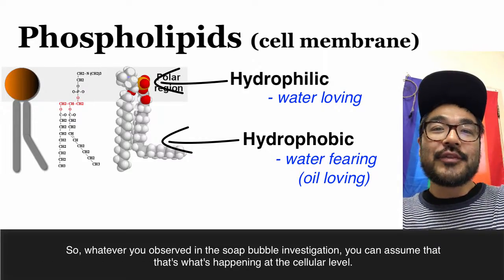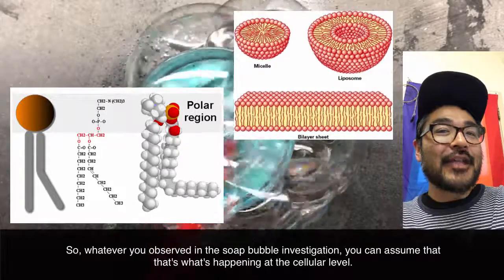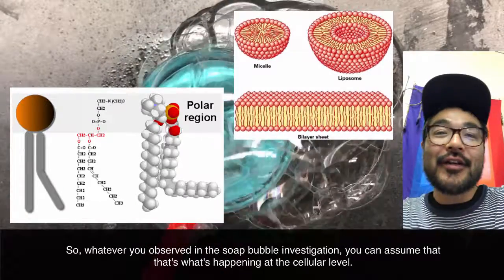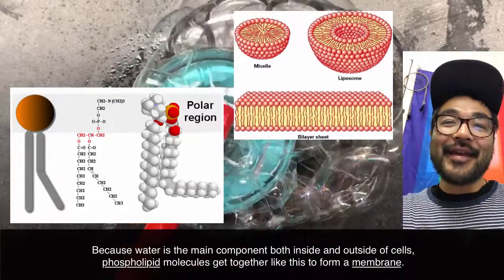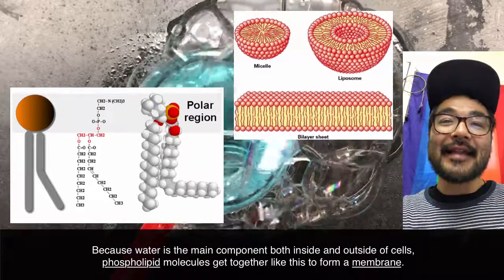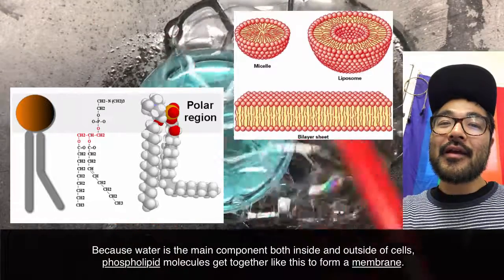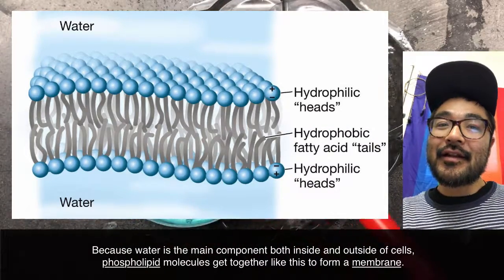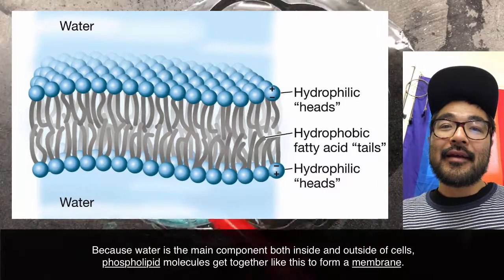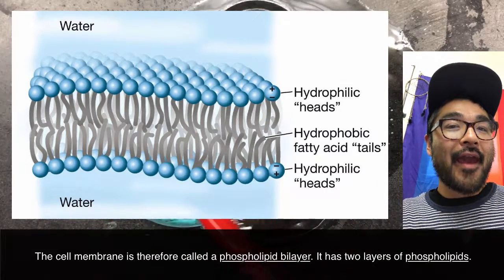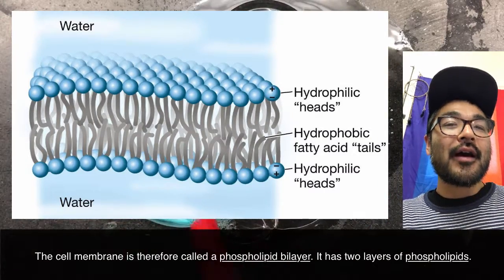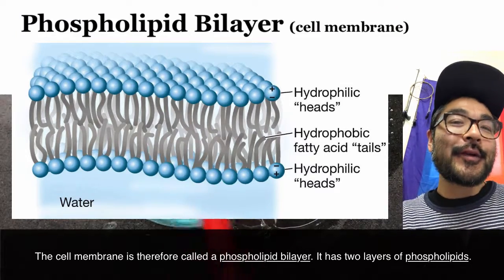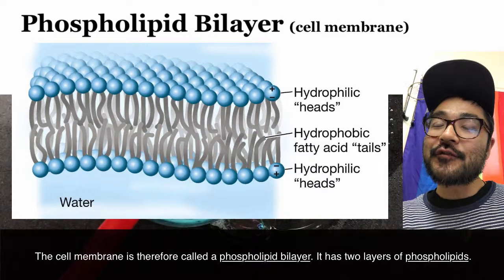So whatever you observed in the soap bubble investigation, you can assume that that's what's happening at the cellular level. Because water is the main component both inside and outside of cells, phospholipid molecules get together like this to form a membrane. The cell membrane is therefore called a phospholipid bilayer — it has two layers of phospholipids.